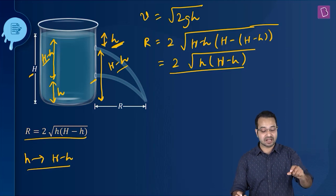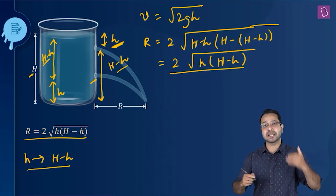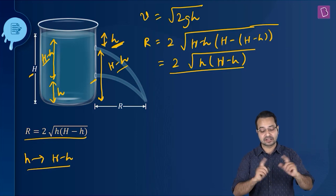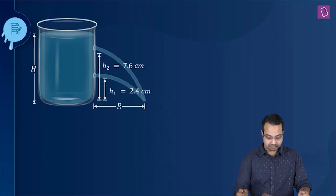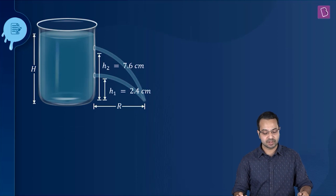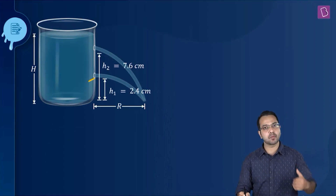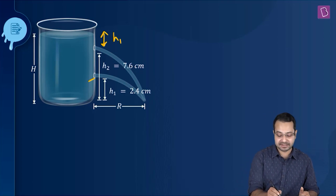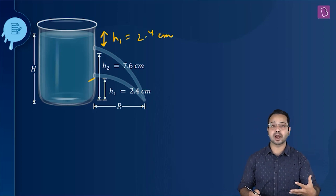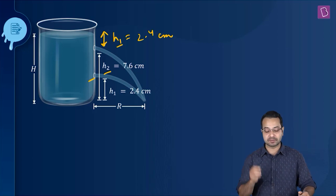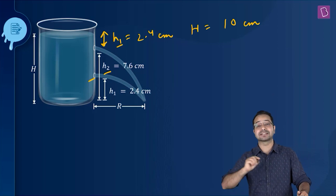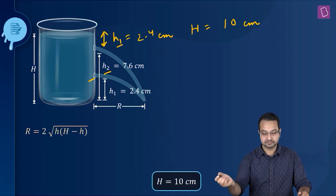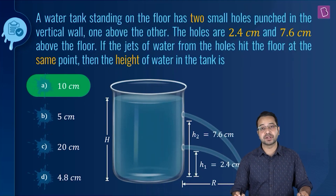This means that in this current situation, hole one is at a height h1 = 2.4 cm from the bottom and they have the same range, which means the other hole has to be at a depth of h1 = 2.4 cm from the top as well. So the total height is going to be h1 + h2 = 2.4 + 7.6 = 10 centimeter. Option A is the correct option.